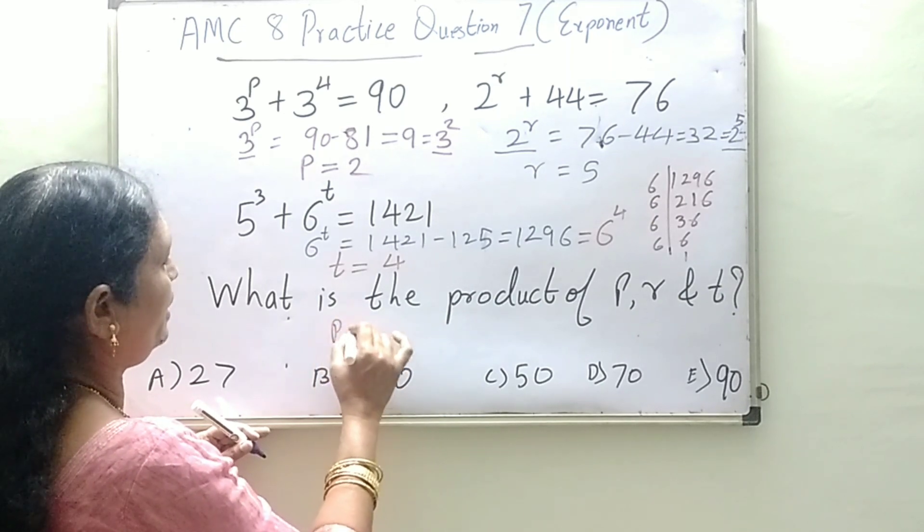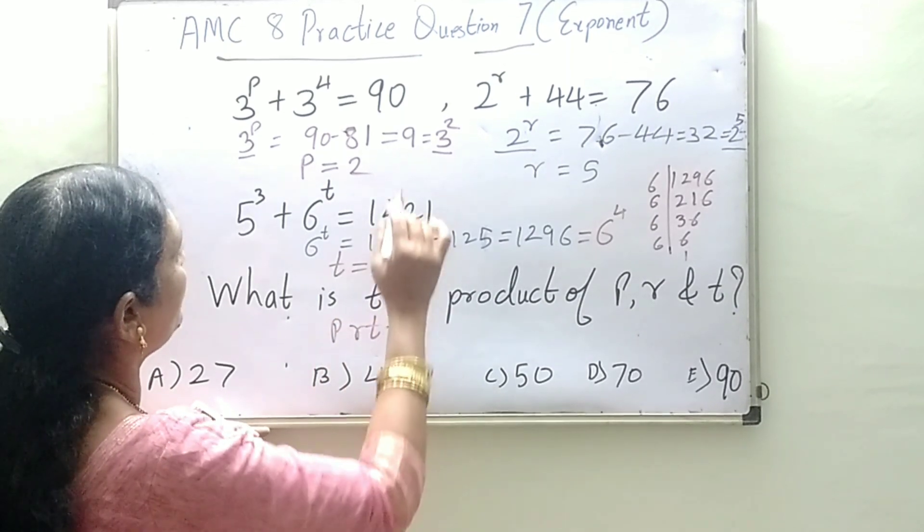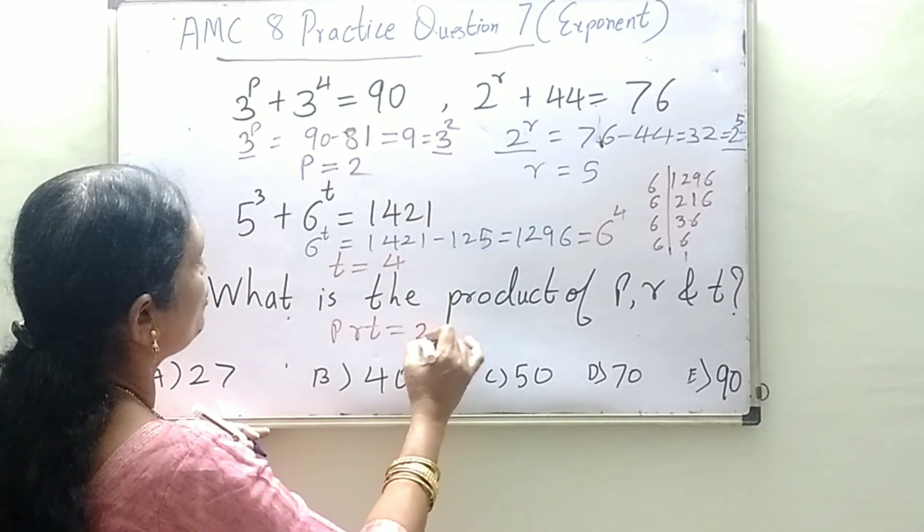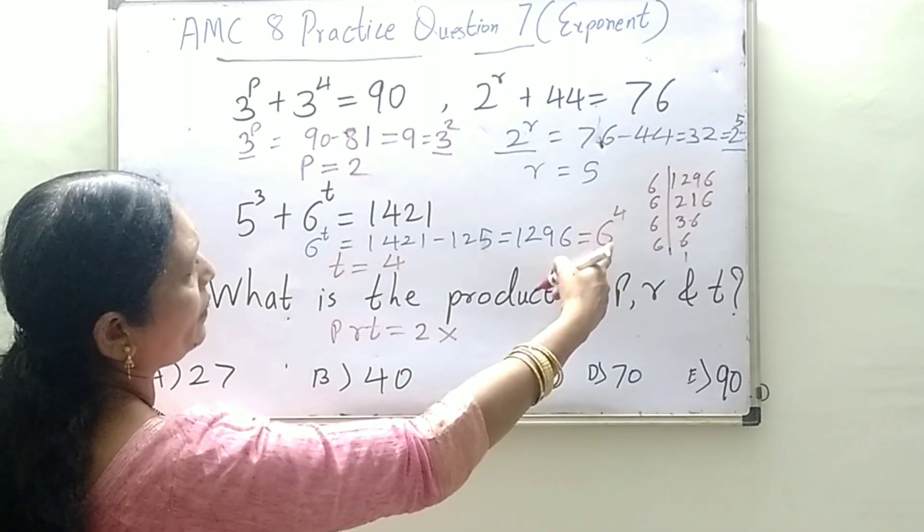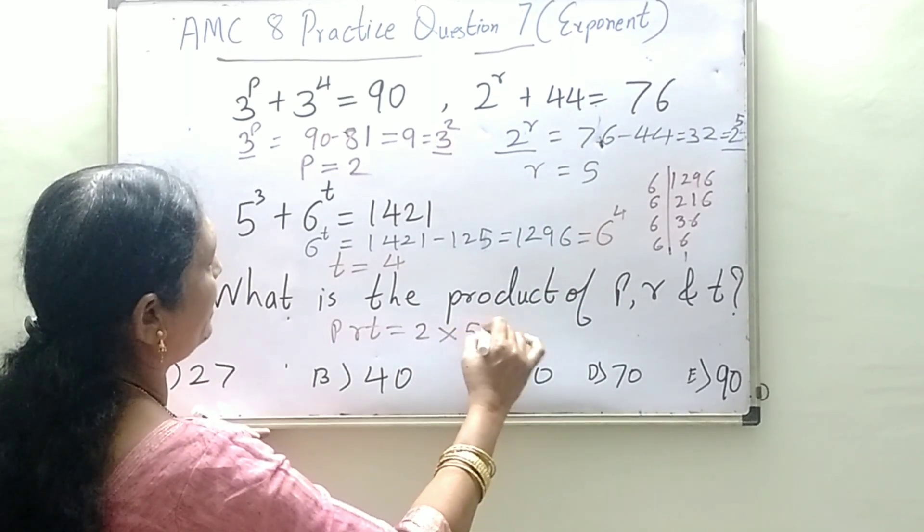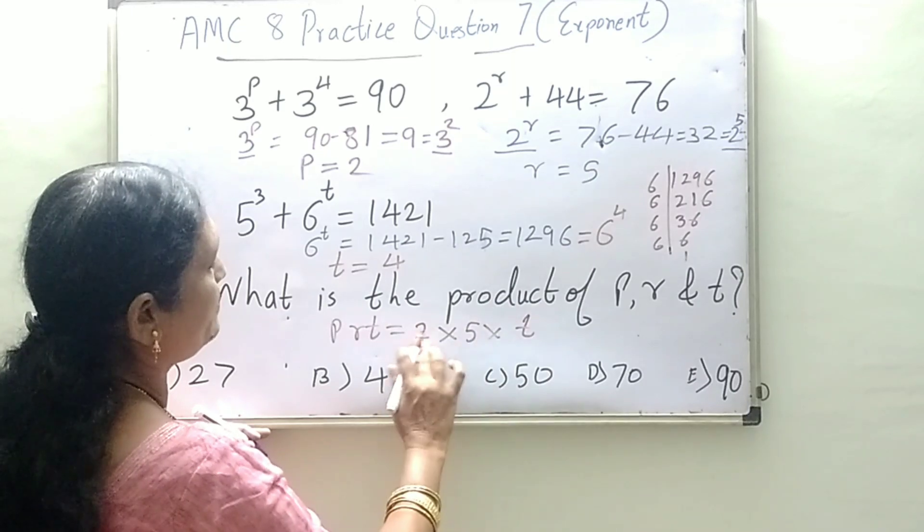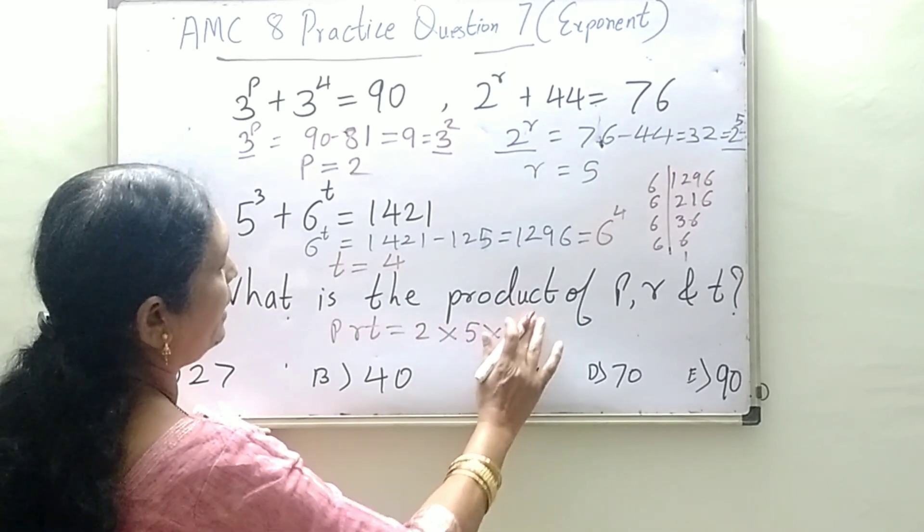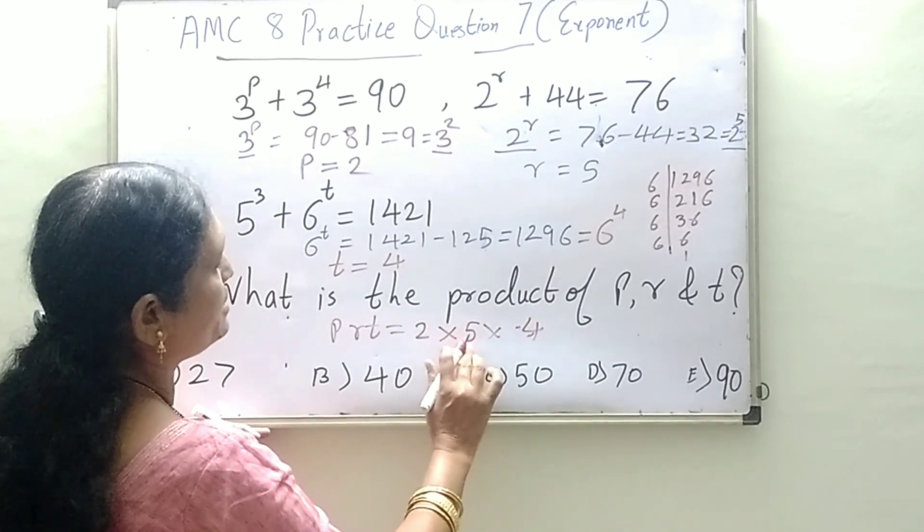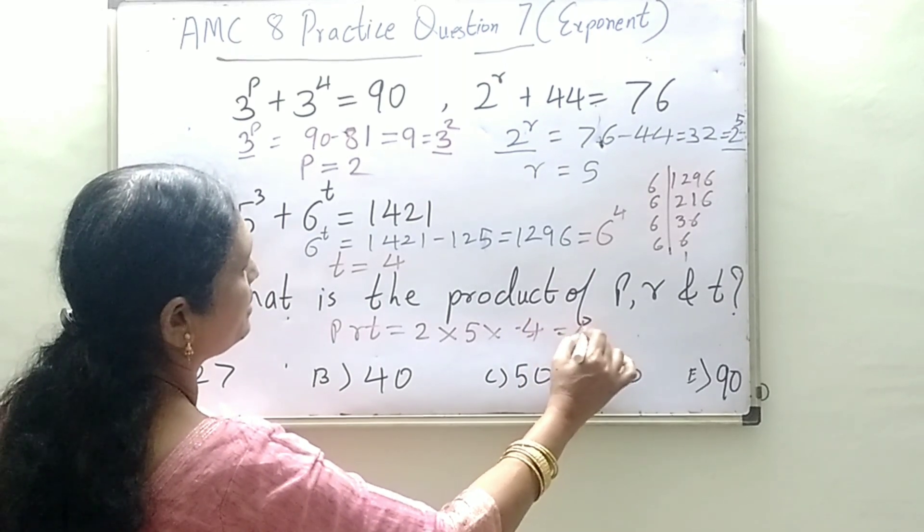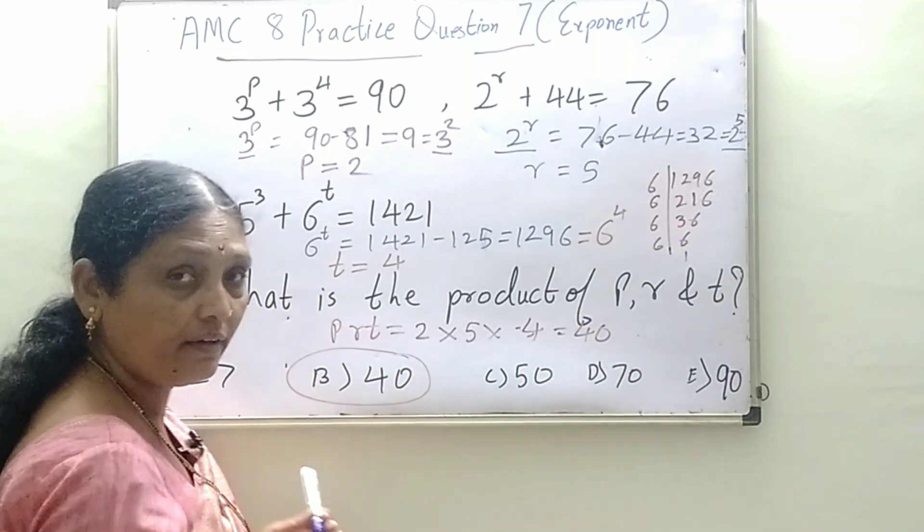Now you are asked to find the product of p, r, and t. The value of p is 2, value of r is 5, and value of t is 4. So 5 times 2 is 10, and 10 times 4 is 40. And so 40 is the answer. Got it?